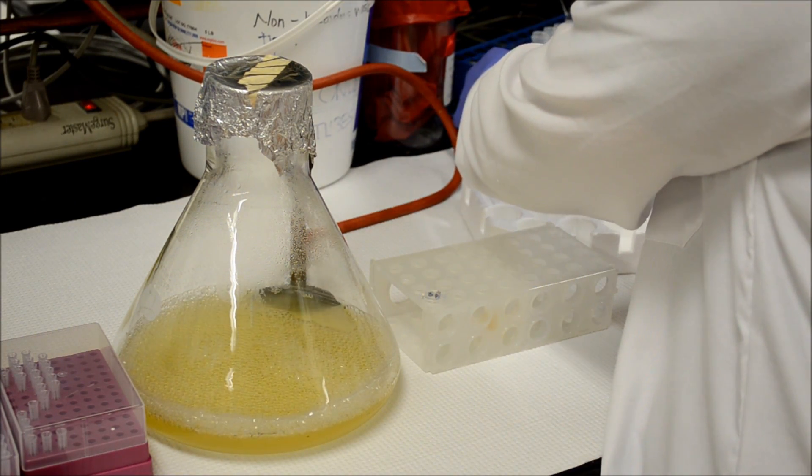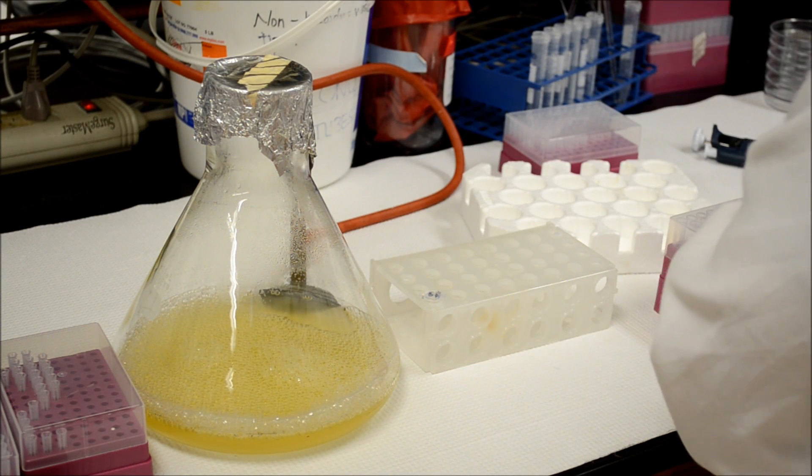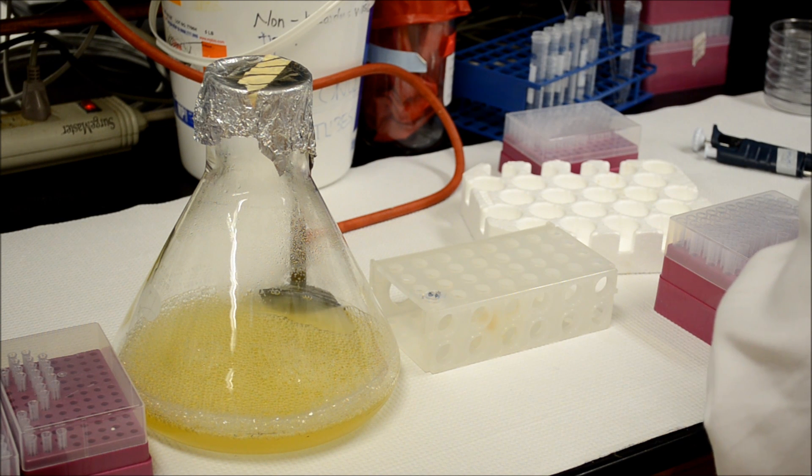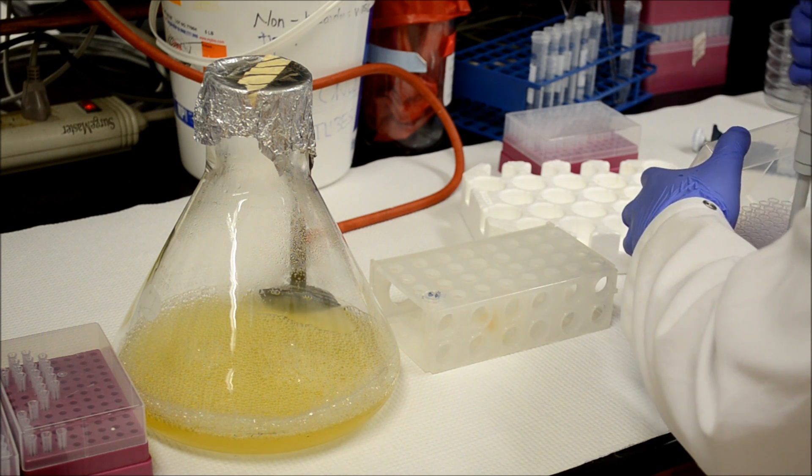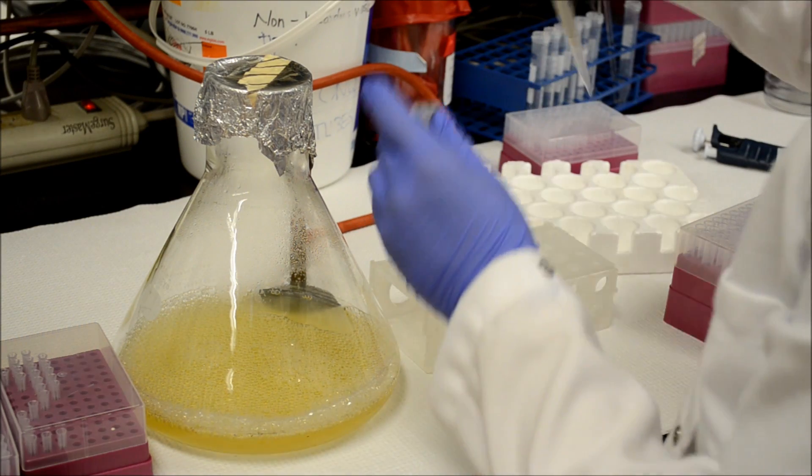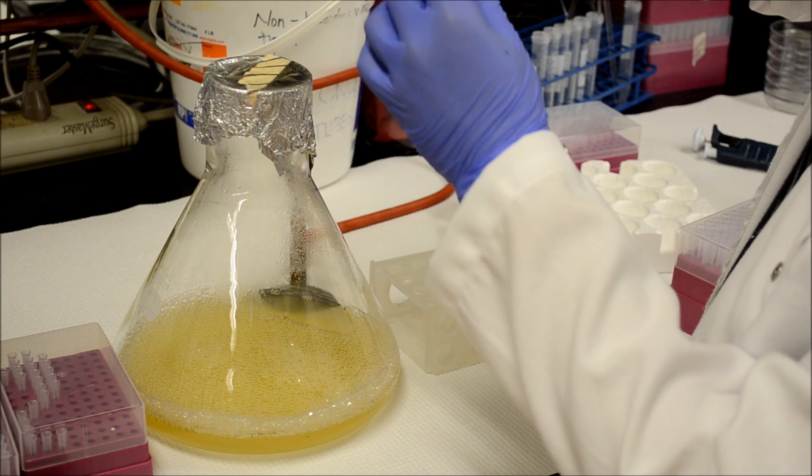For this, we need to add IPTG. What IPTG does is make the bacterial cells produce the protein that we want in large quantities. The amount of IPTG we add to the bacterial solution is similar to the amount of ampicillin that we would add. For 500 milliliters of bacterial culture, we want to add 500 microliters of IPTG.